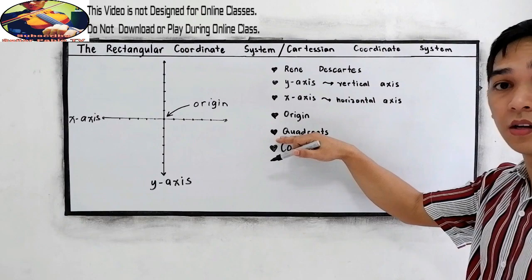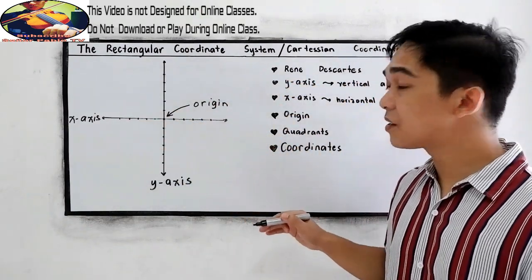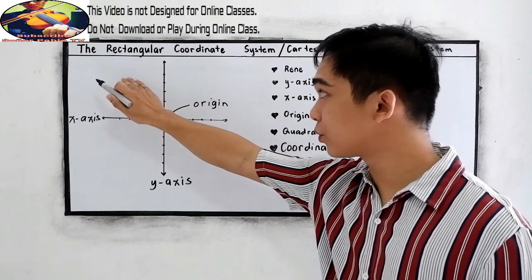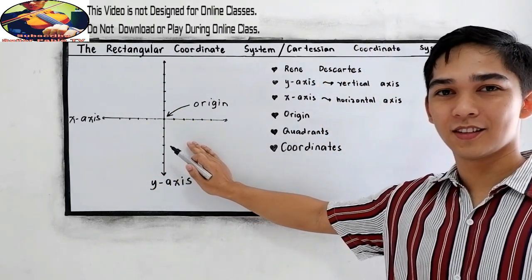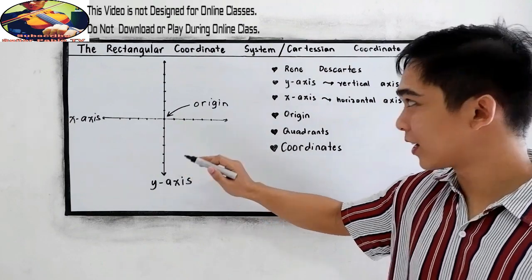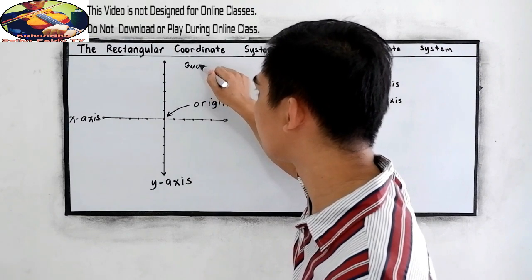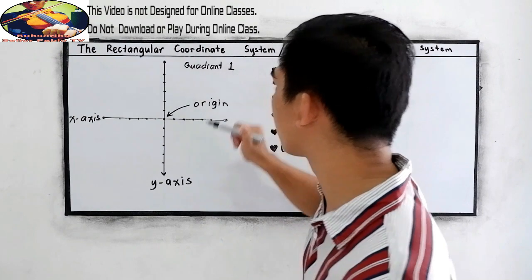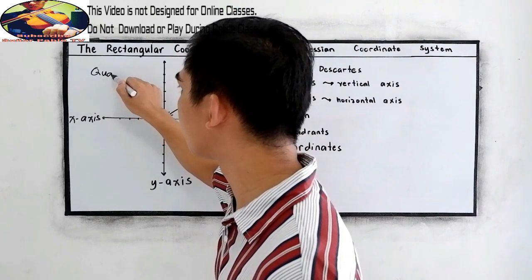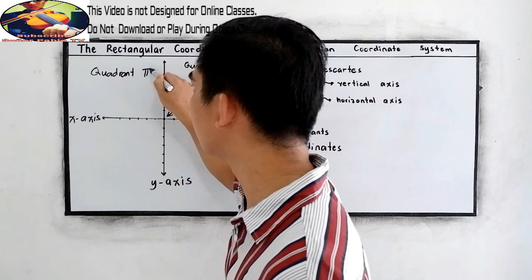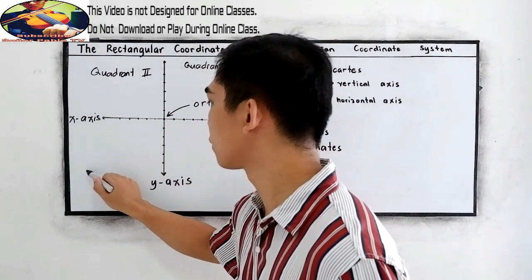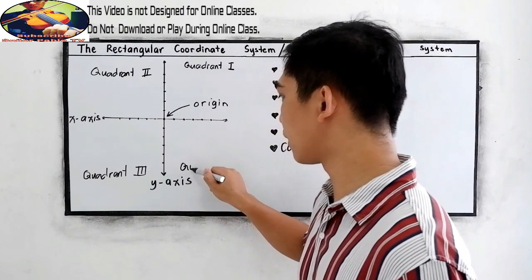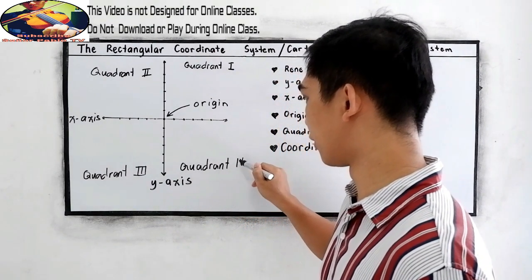Next, we have the quadrants. Notice that our rectangular coordinate system is divided into four. This is quadrant one, quadrant two, quadrant three, and quadrant four. They are named counterclockwise.